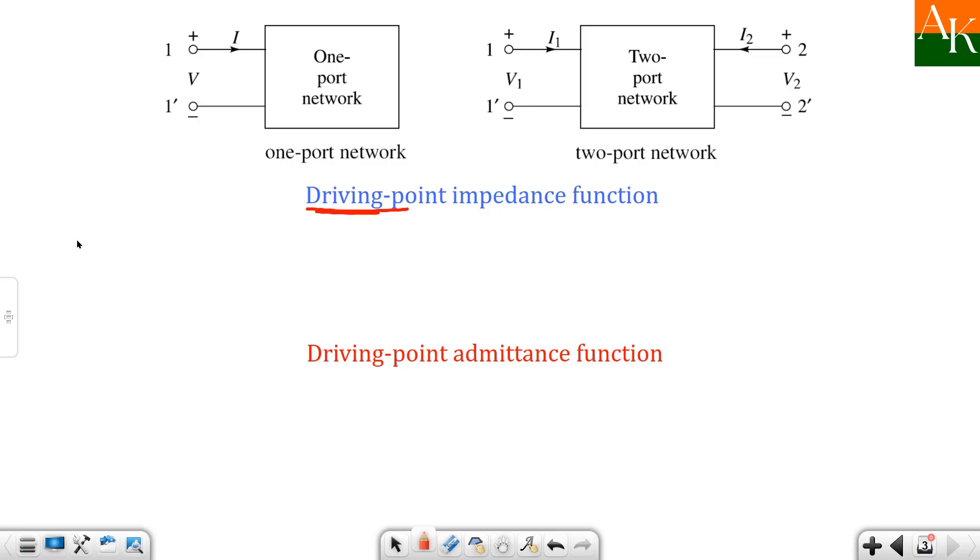So for one port network you can have impedance function. This impedance word is used, so z of s you have to show. Either z is the letter we generally use for showing impedance, so it is the ratio of voltage to current. So it is v of s by i of s and we are talking about the transform network, so either you have to write v of s or you have to write i of s.